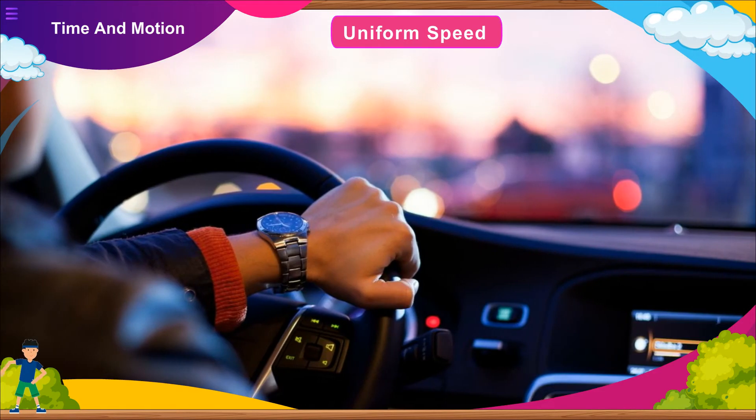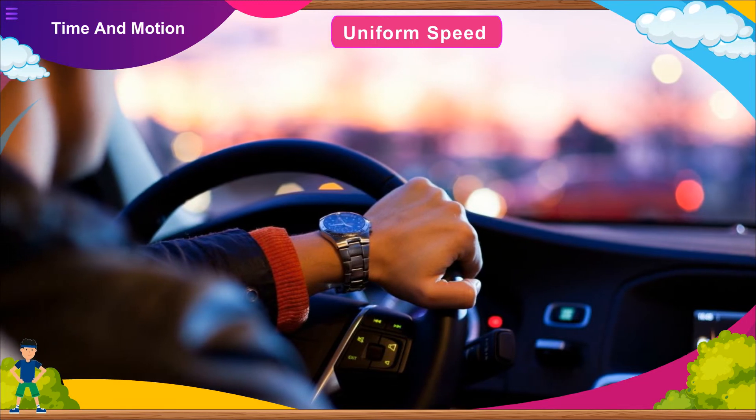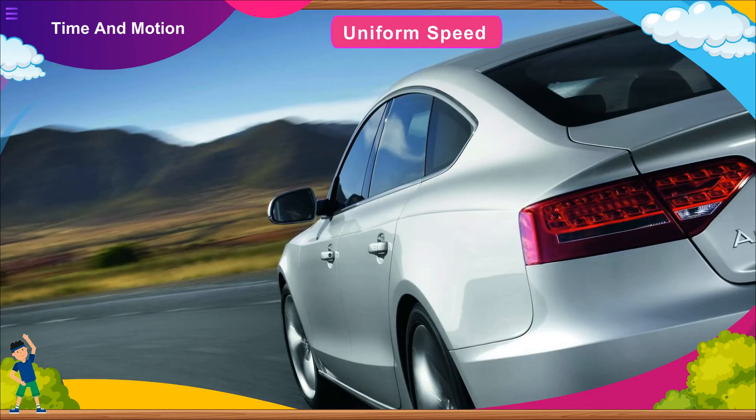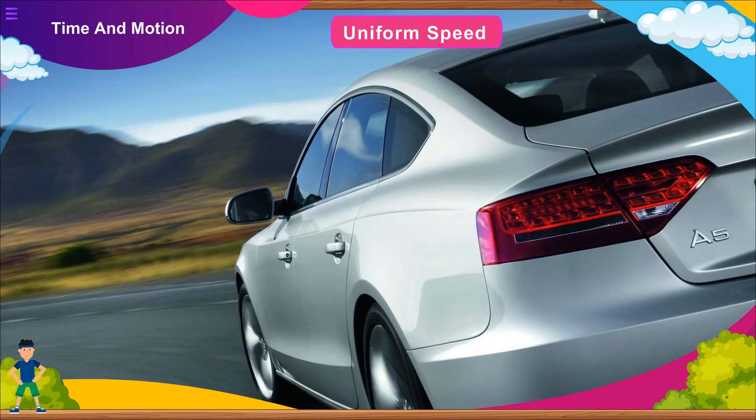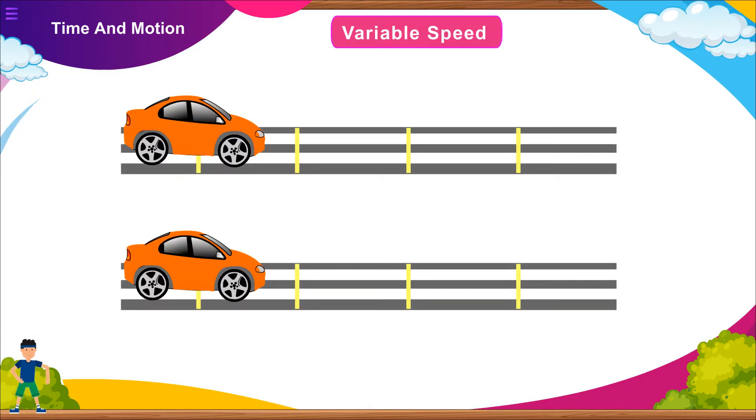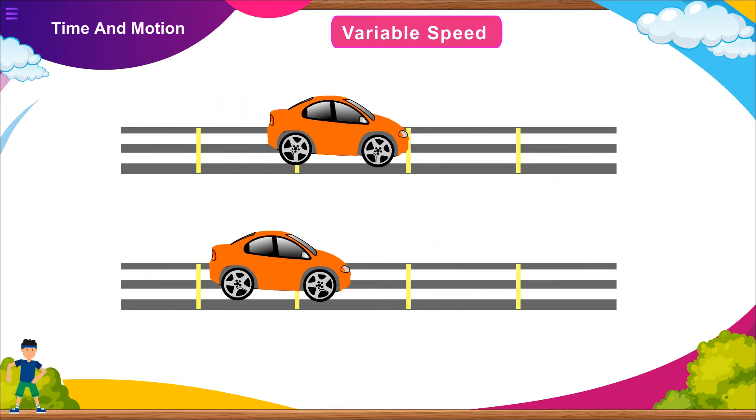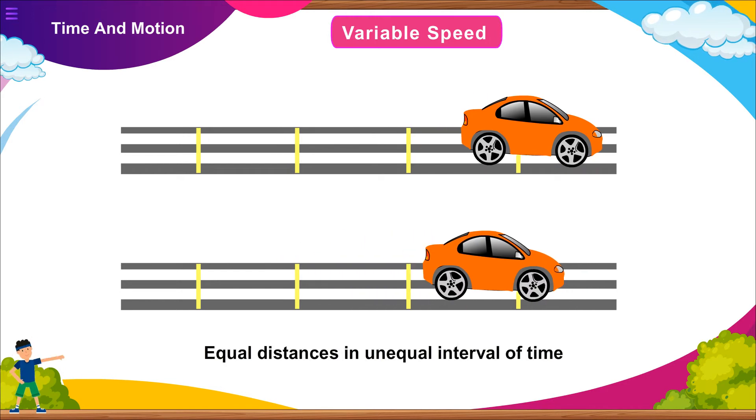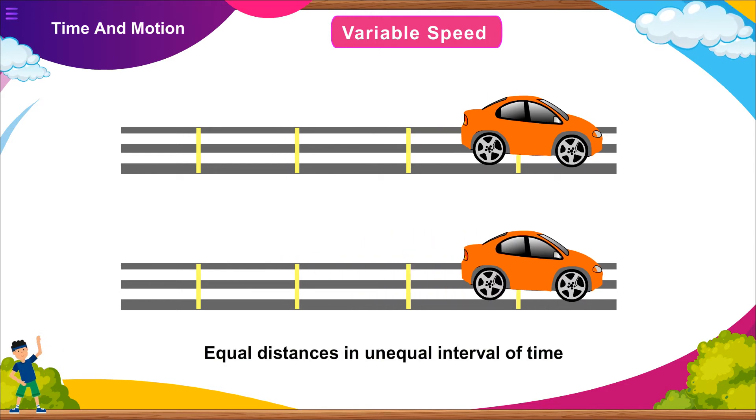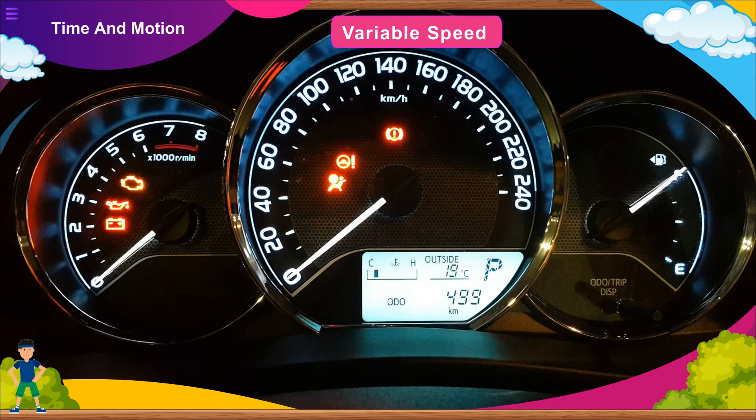Uniform speed: A body is said to be moving with uniform speed if it covers equal distances in equal intervals of time. For example, a car moving on a highway. Variable speed: A body is said to be moving with variable speed if it covers unequal distances in equal intervals of time, or equal distances in unequal intervals of time, however small the time interval may be. Example: A car moving on a busy market street.